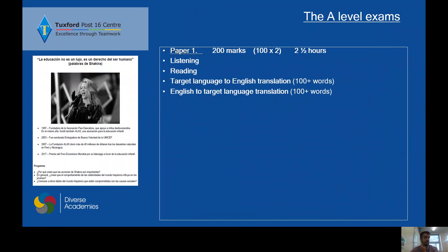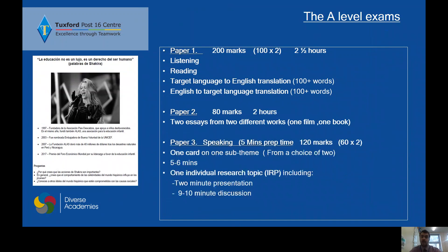Then you have paper two, which is the writing — two essays about the cultural topics as we've discussed. And paper three, which is the speaking. You do a photo card, just like the one shown here, similar to the one you did for GCSE. Your speaking also incorporates your IRP — individual research topic — which is a topic you have chosen about something specific to Spanish, Hispanic, or Latin American culture. You have to pick it, research it, create a presentation about it, and then have a nine or ten minute discussion with your teacher or the examiner about your topic. It's a little bit more self-directed.